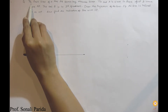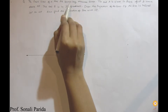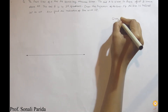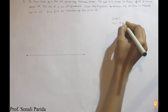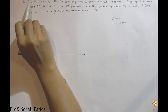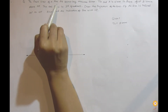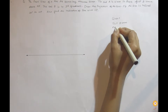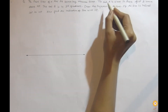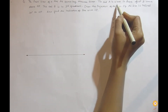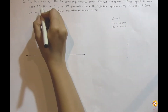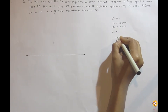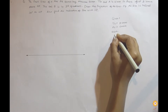The front view of line AB which is 80 mm long measures 60 mm. So 80 mm long itself gives us the true length, which is 80 mm, and the front view measures 60 mm. The end A is 15 mm in front of VP and 10 mm above HP.